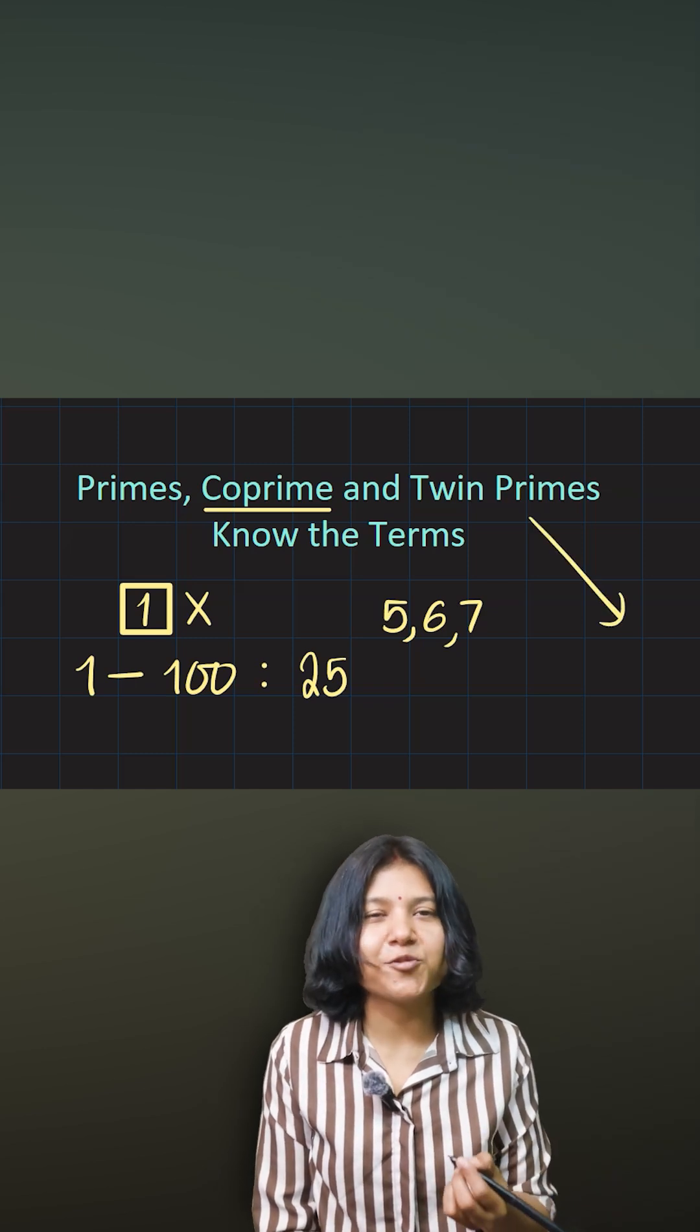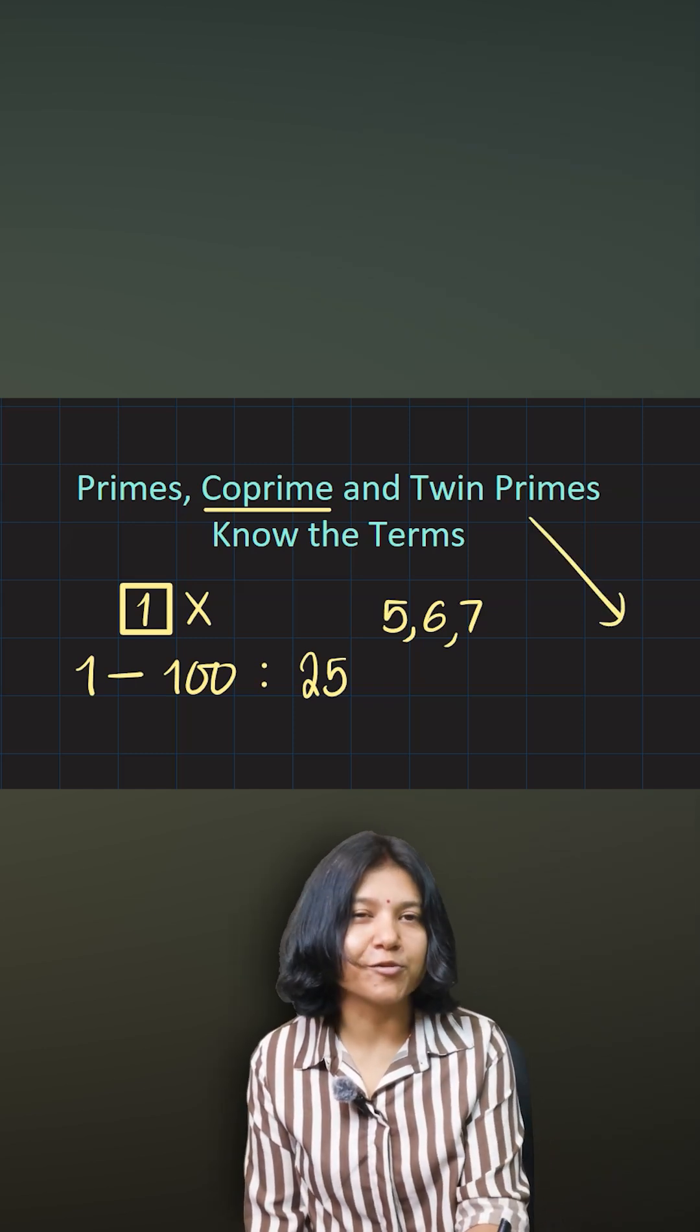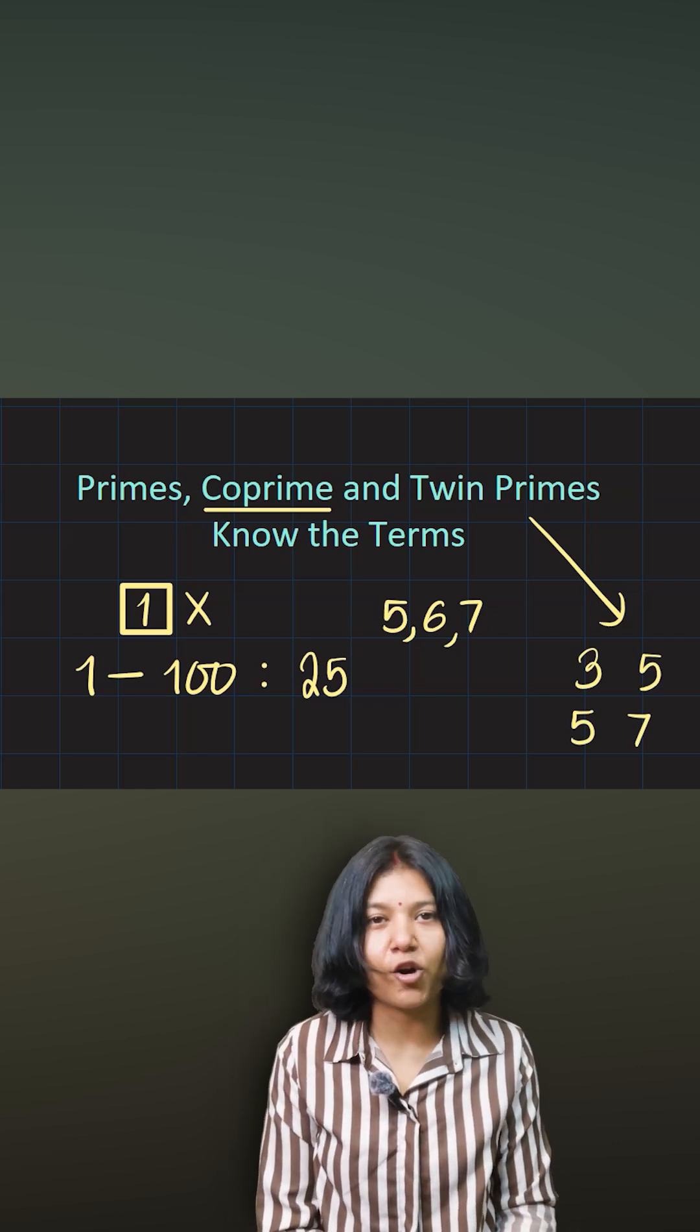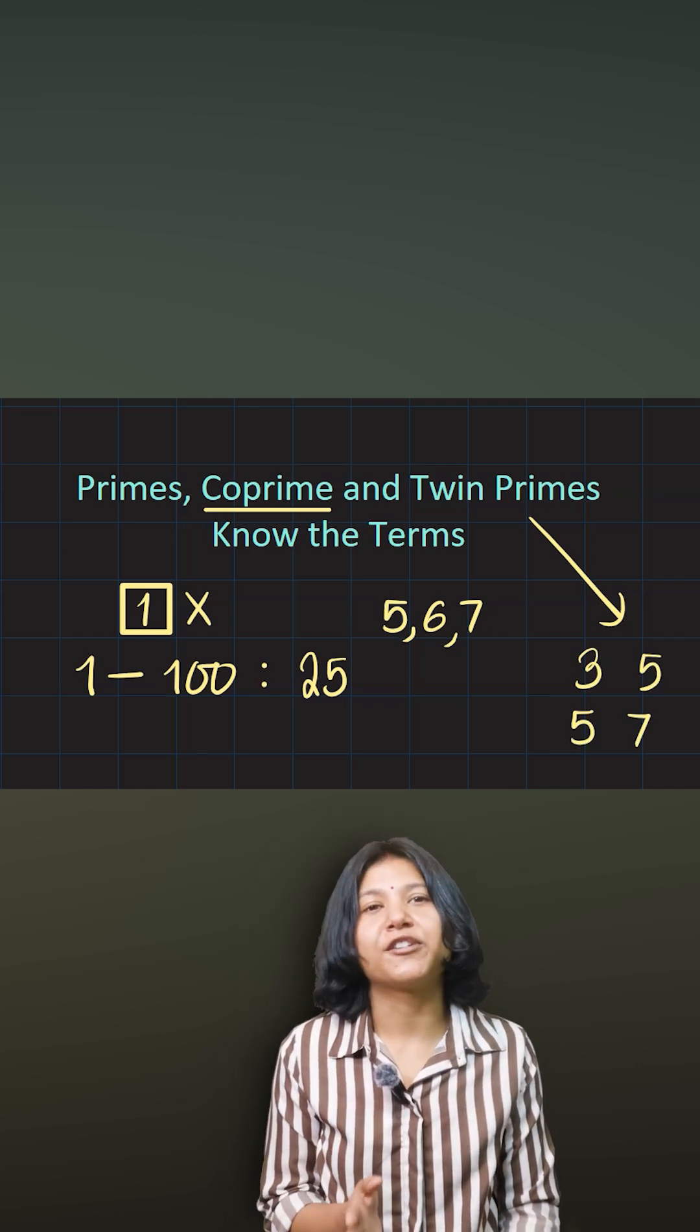Now there is a new thing called twin primes. Twin primes are two prime numbers that have a difference of two, like three and five, five and seven, forty-one and forty-three, seventy-one and seventy-three. These are all twin primes because they have a difference of two.